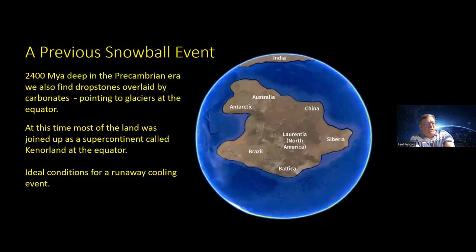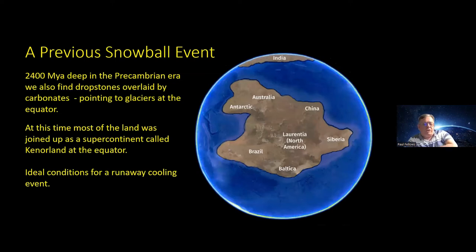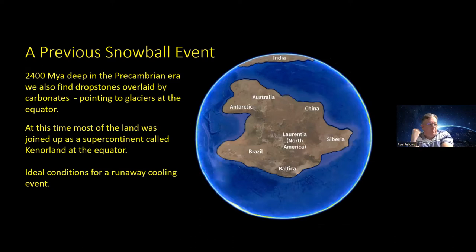This was not the only Snowball event. There was a previous one even before banded iron formations and before photosynthesis evolved — the same mechanism with another supercontinent, where all land except India gathered at the equator, causing an earlier Snowball deep in the Pre-Cambrian. Again, dropstones overlaid by cap carbonates — all the same signatures — are found in rocks from that period.